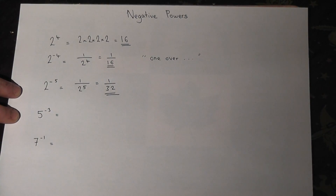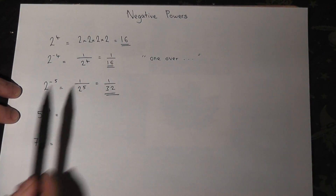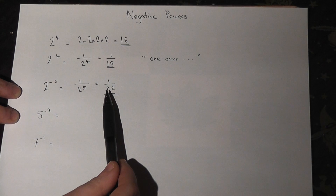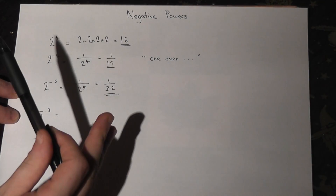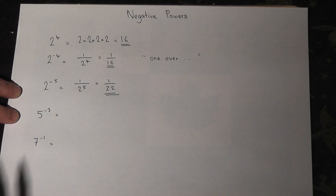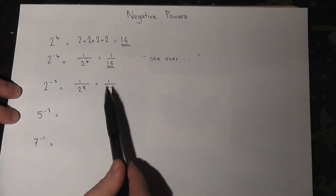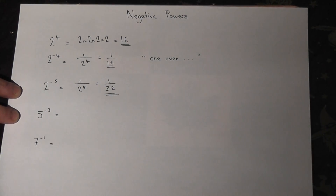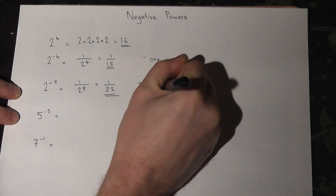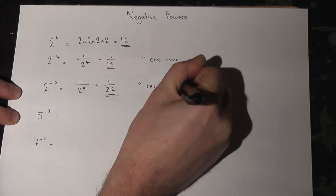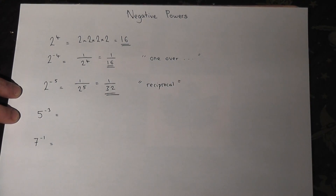Now to try and visualise this — these fractions — just imagine a cake cut into either 16 or 32 slices. 1/16 is just 1 out of 16 slices, or 1/32 is just 1 out of 32 slices. And another word for 1 over, sort of a posh word, is reciprocal. It's worth knowing that word.